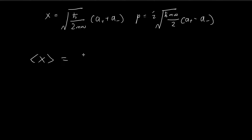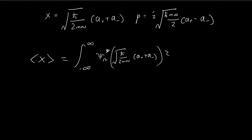First, let us focus on the expected value of x. We have the integral for the expected value in the nth stationary state — we take the conjugate and multiply by x. We substitute the alternate expression directly. A-plus is going to raise ψ_n to something proportional to ψ_{n+1}, and a-minus is going to lower ψ_n to something proportional to ψ_{n-1}.